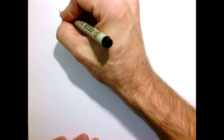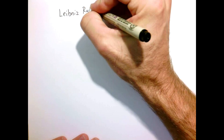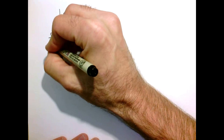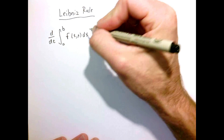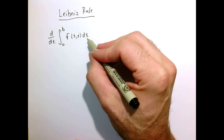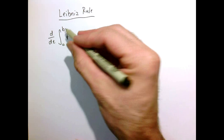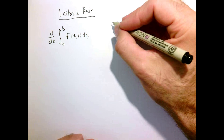Today we're going to discuss Leibniz rule. We'll start with a simple example where we have a function which is a function of time and x. I'm going to integrate that function with respect to x from limits a to b, and then I want to take the time derivative of that integral.